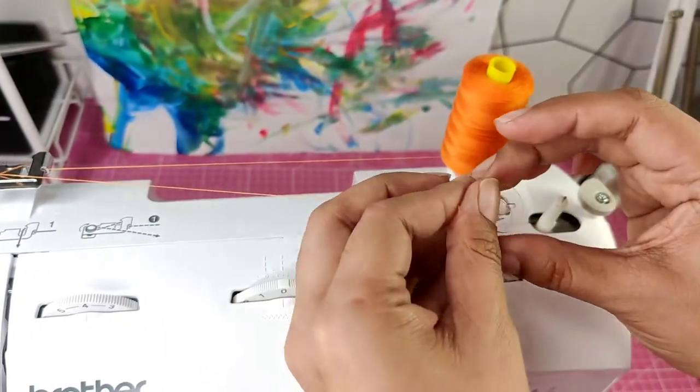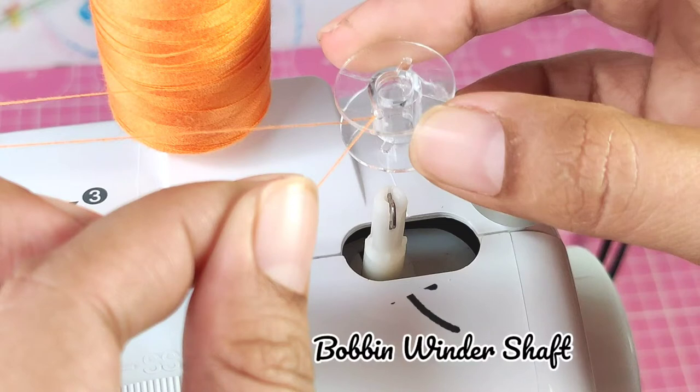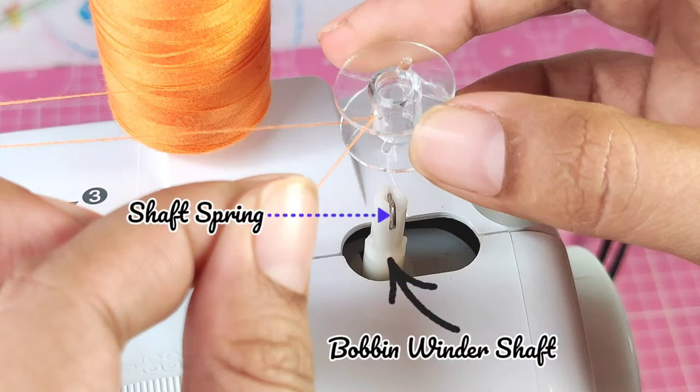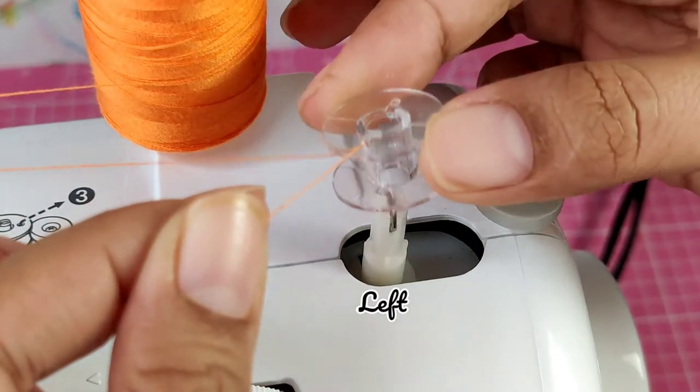We are now ready to place the bobbin on the bobbin winder shaft. This is the bobbin winder shaft and the metal on top of it is the shaft spring. Right now the bobbin winder shaft is in the left edge.